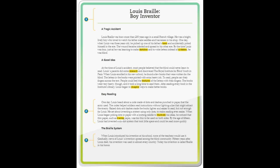He set about inventing a system using only dots to make reading even easier. When Louis began poking dots in paper with a knitting needle to illustrate his ideas, he noticed that thin paper, such as tracing paper, was too thin to be used on both sides. By the age of 15, Louis had invented a six-dot system that took little space and could be read more quickly.